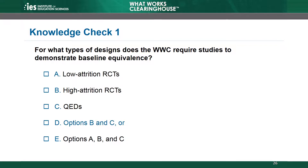The correct answer is D. Both RCTs with high attrition and QEDs must demonstrate baseline equivalence. Choices B and C are only partially correct for this reason. Choices A and E are not correct because low attrition RCTs do not need to demonstrate baseline equivalence. This is because the WWC assumes low attrition RCTs have equivalent groups on average. Low attrition indicates the sample loss between randomization and analysis was likely not large enough to introduce bias.